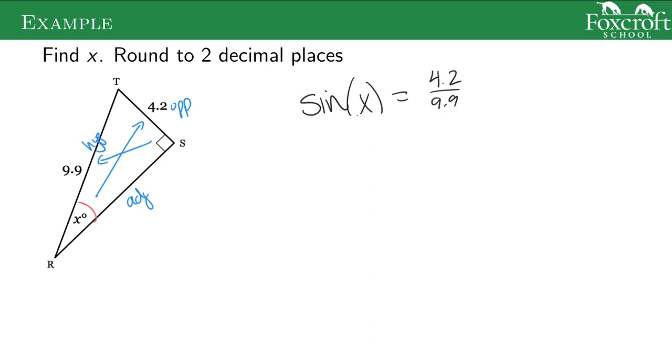Sine of x is the opposite side divided by the hypotenuse. Always write that original trig equation first before you change it to sine inverse. Those things flip places. Then I use my calculator. 4.2 divided by 9.9. I get 25.102, which I'm rounding to two decimal places. I can just write it as 25.10 or 25.1 degrees is the answer.